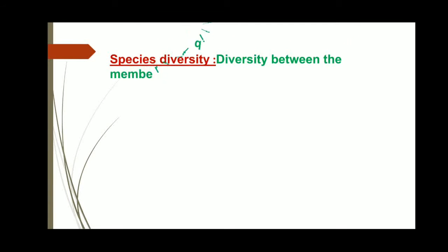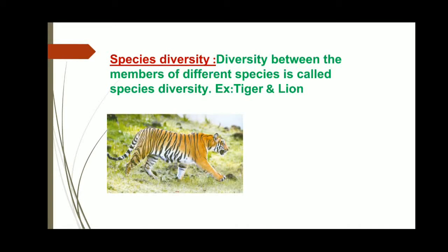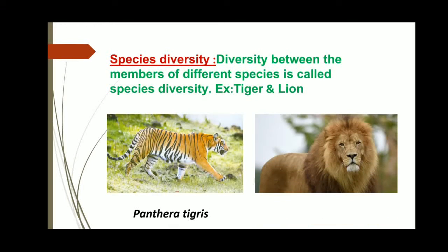Now, species diversity. The diversity between the members of different species is called species diversity. This includes diversity between animals from the same genus but different species. This is called species diversity.